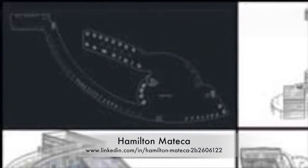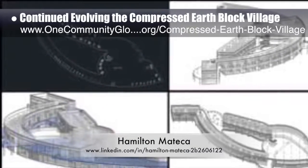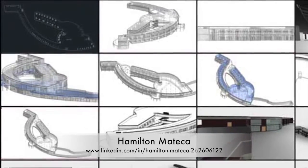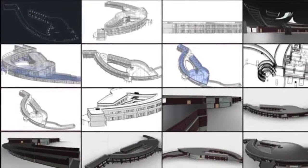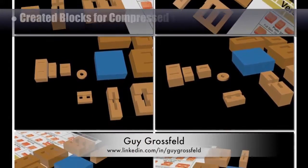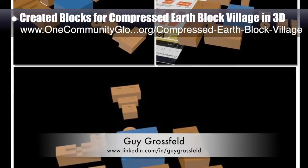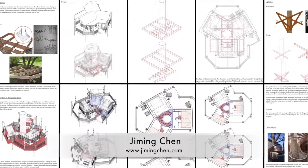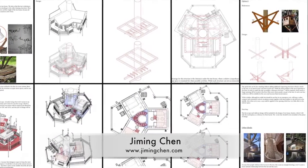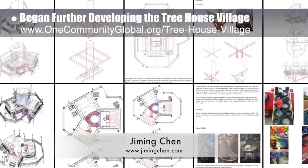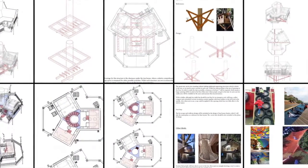Hamilton Matika, AutoCAD and Revit drafter and designer, continued evolving the compressed EarthBlock Village Pod 4 rooftop recreation space in AutoCAD. In his tenth week working on these designs, he also started work on elevation drawings for this structure, continuing development in Revit. Guy Grossfeld, graphic designer, turned his attention to 3D creation of the specific blocks for the compressed EarthBlock Village Pod 4 — his fifth week of 3D work using 3DS Max. Jiming Chen, designer with a master's in architecture and BA in engineering, joined the team and began further developing the Treehouse Village Pod 7, focusing in his first week on structural floor support for the treehouses and stair and ladder emergency access options.